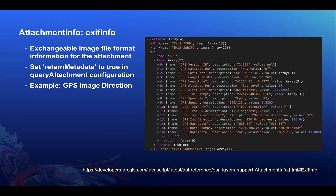A useful property that exists in the attachment info class is the exif info property. Exif info, also known as exchangeable image file format, is metadata for various types of media such as images and sounds. For example, you can find useful info in the exif info such as image orientation and GPS image direction. In order to get this information from the query attachments call, you must set return metadata in the query attachments config object to true. The exif info property will contain an array of objects with various types of exif info. An example we're going to take a look at today is GPS image direction. For more info, visit the link in the documentation about the property.